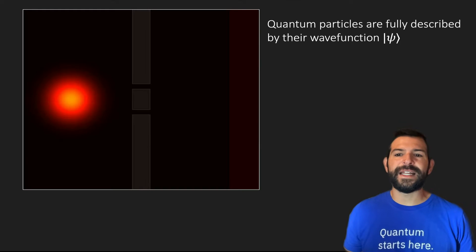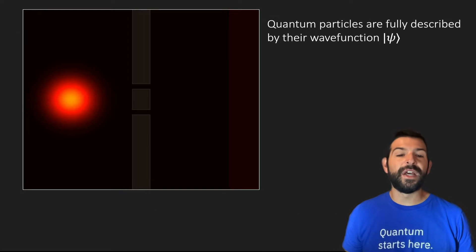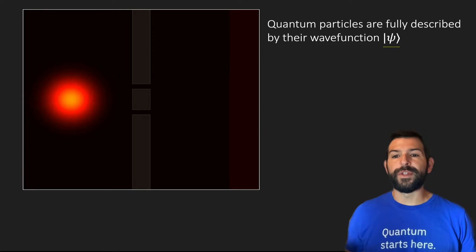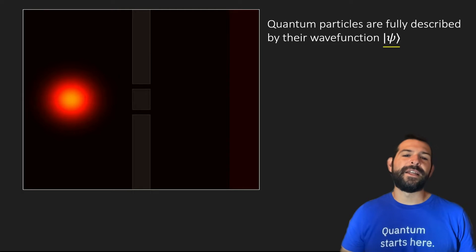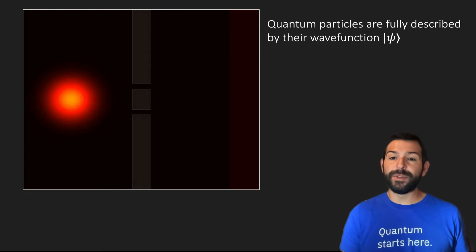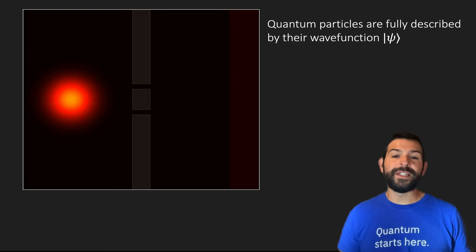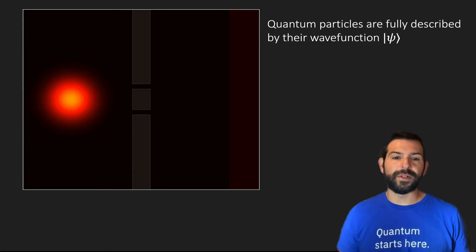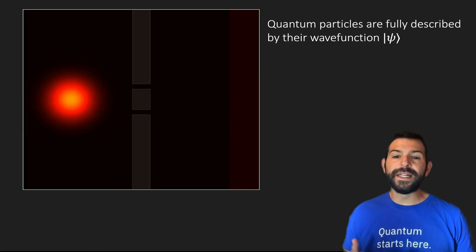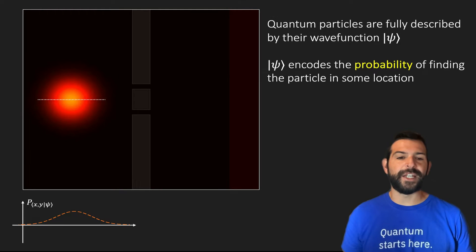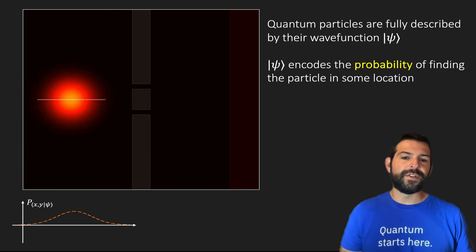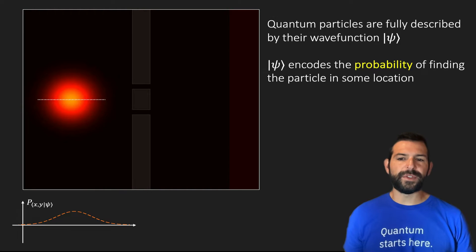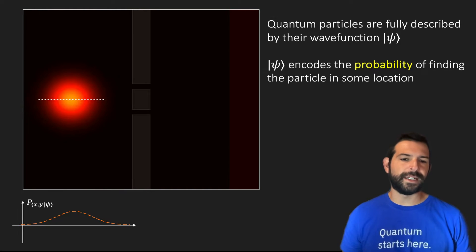What quantum mechanics says is that even particles like electrons are fully described by a wave function, which here we are denoting with the Greek letter psi. What's shown on the left is a double-slit experiment where we have an electron, but what this bright object represents is not a solid localized particle, but rather the probability density of finding that electron in a given location on this plane.